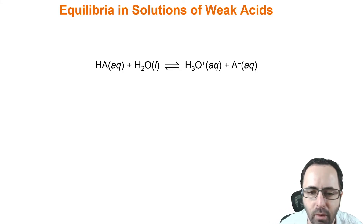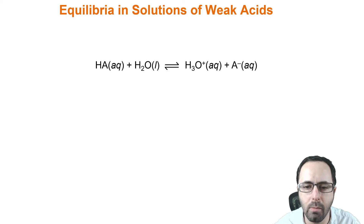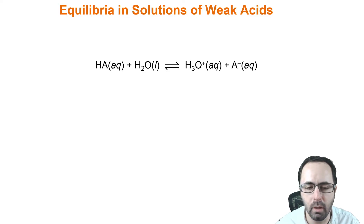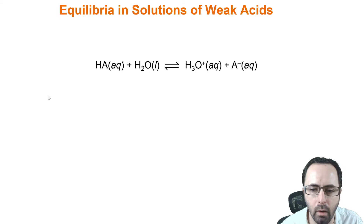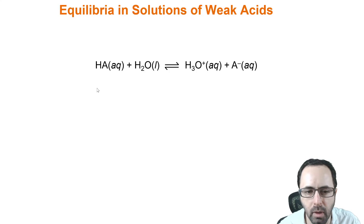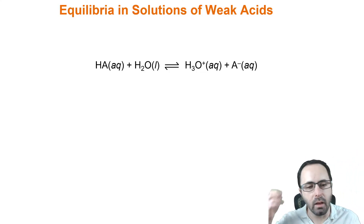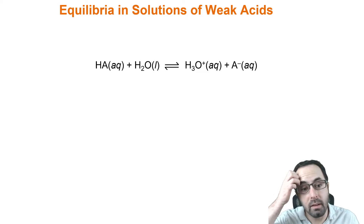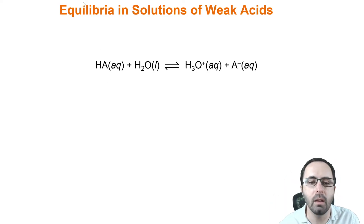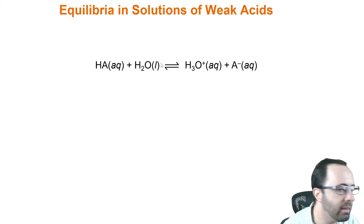Hi, CHEM 151 students, and welcome back to the second lecture of this week, week 10, about acids and bases. We're going to be focusing here on weak acids and weak bases, and specifically their equilibria in this lecture. What makes a weak acid a weak acid is that unlike a strong acid, it does not completely dissociate. So there is an equilibrium to its acid reaction.